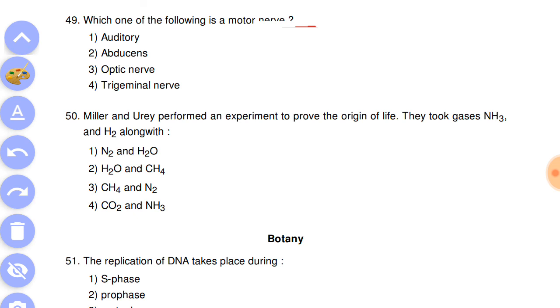Question number 49: which of the following is the motor nerve? Answer is the second, abducens. Question number 50: Miller and Urey performed an experiment to prove the origin of life. They took gases NH3 and H2 along with answer is the second, H2O and CH4.